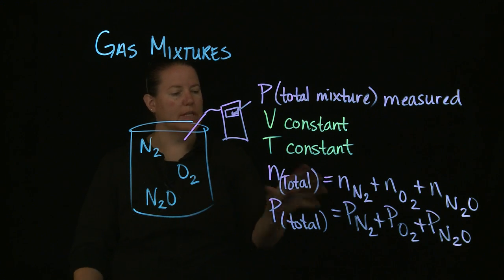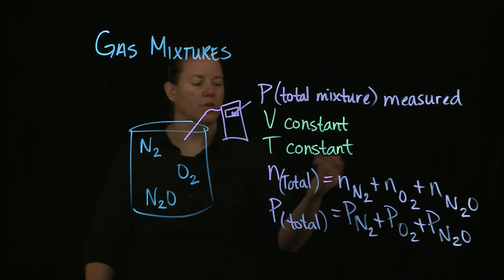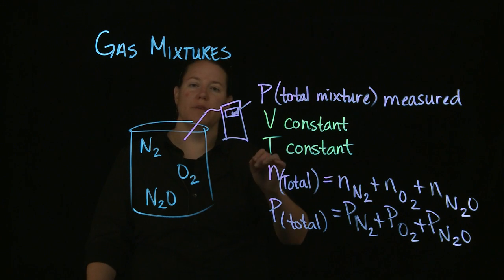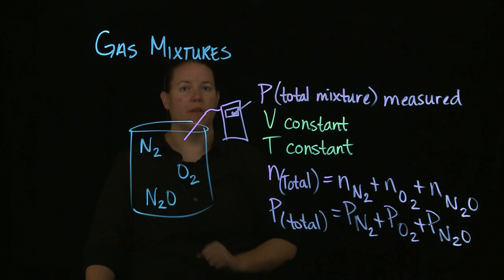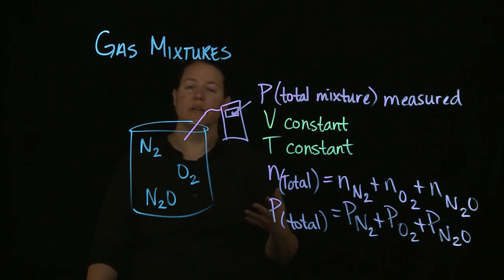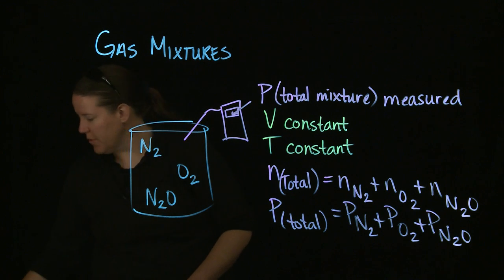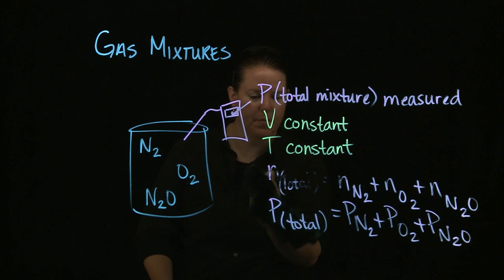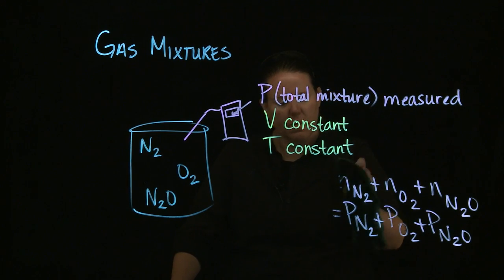You could add the individual pressures if you knew them together to get the total pressure of the entire mixture of gases. The thing here that's interesting is not necessarily using these equations. If you specify one of them in the ideal gas law, so for instance if you specified the moles of N2 in the ideal gas law with the volume and temperature, then you would be able to measure the partial pressure of N2 as well.